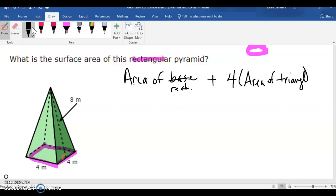And we're going to add 4 area of the triangles that make the point, that make the sides. What's the formula for the area of a rectangle? Base times height. And then we're going to have 4. What's the area of a triangle? Base times height divided by 2.